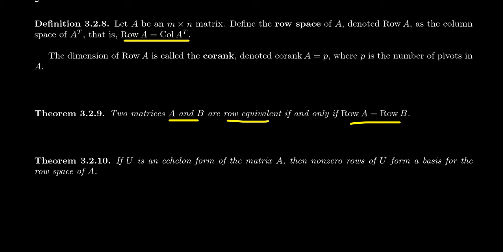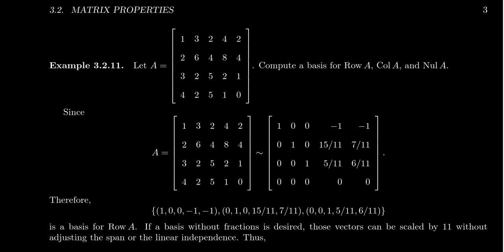This is useful because if we grab an echelon form U of matrix A, the non-zero rows of the echelon form will form a basis for the row space of U. In the echelon form we can see exactly which rows are pivot rows with no confusion about interchange. Since U is row equivalent to A, the row space of A equals the row space of U. So we can use a basis for the row space of U to give us a basis for the row space of A.